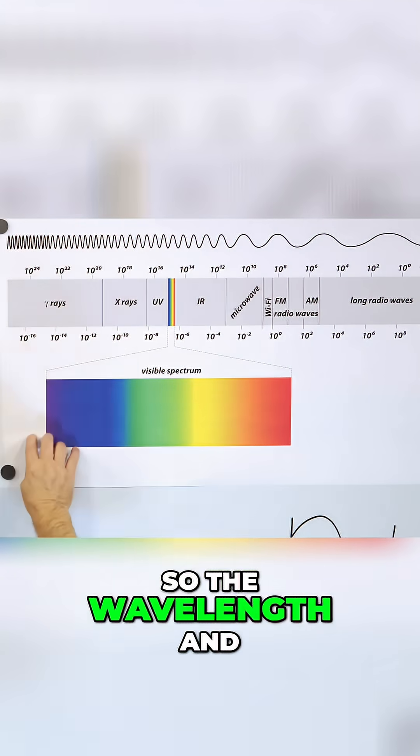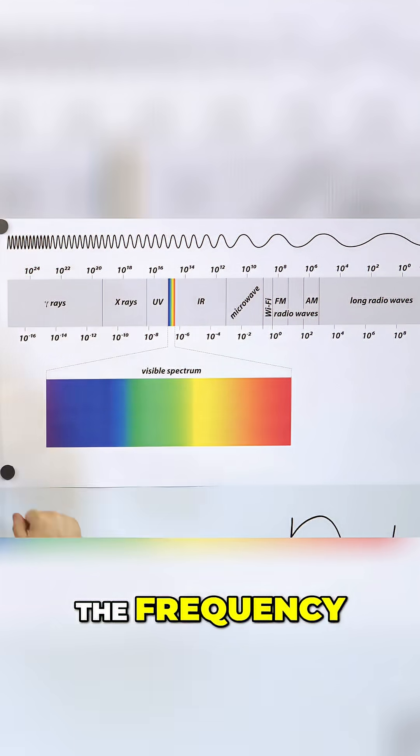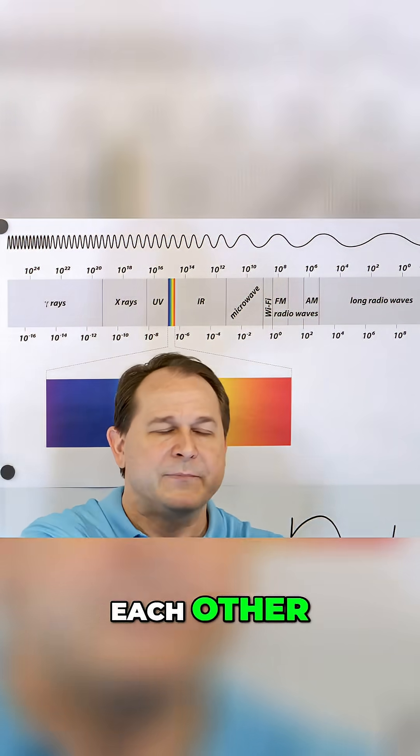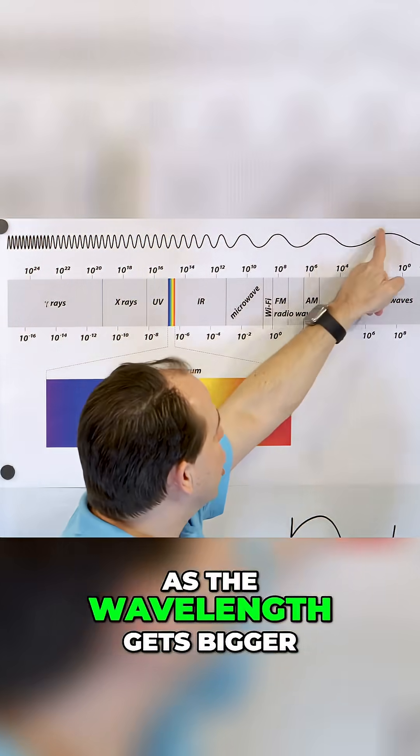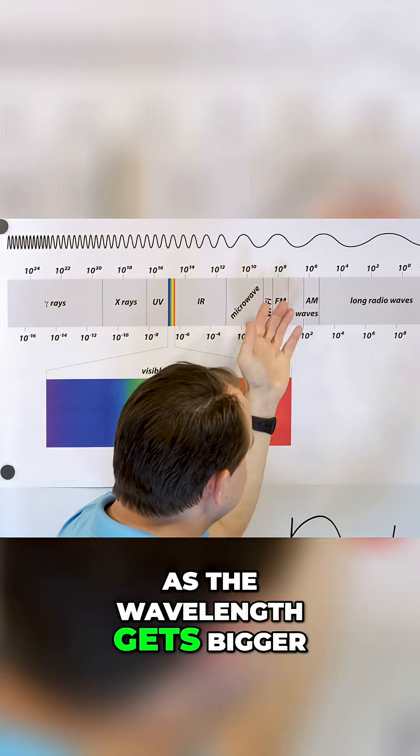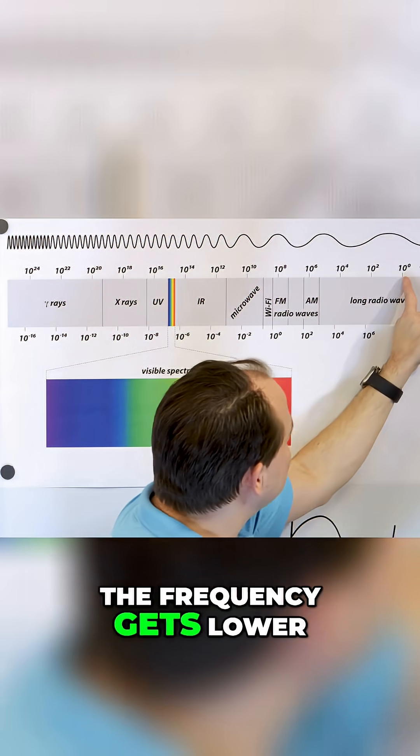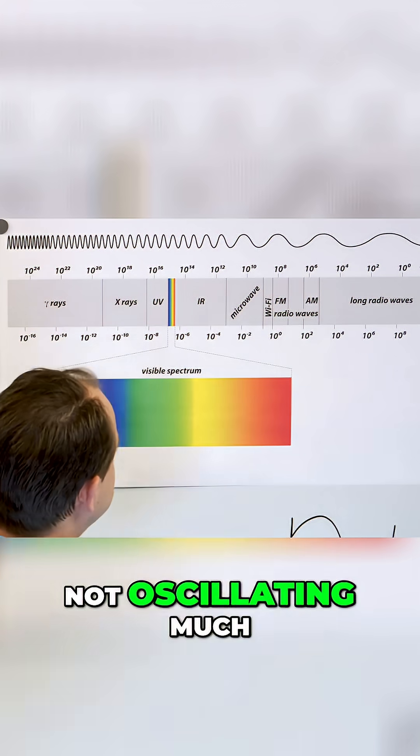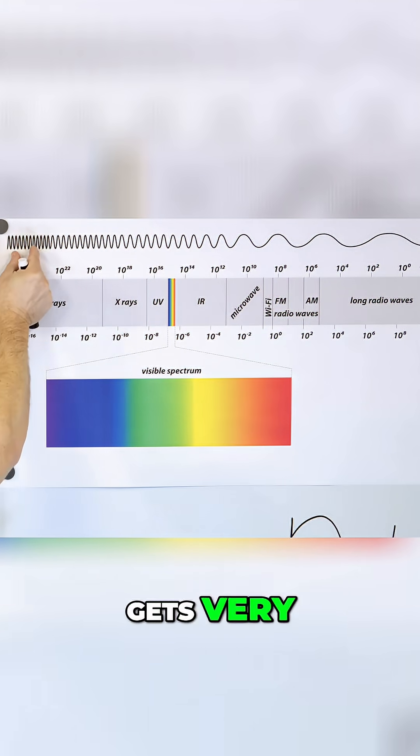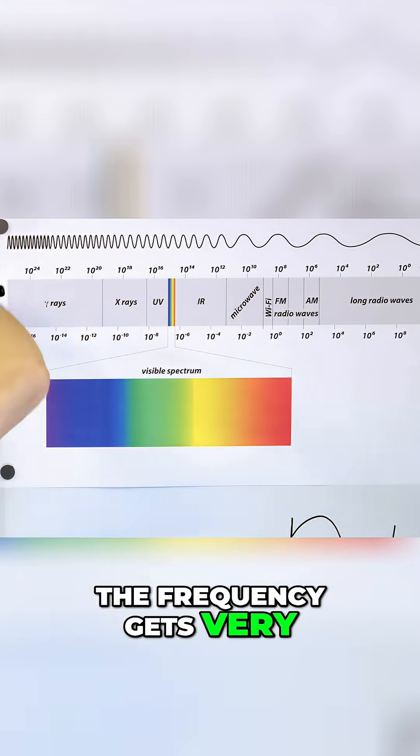So the wavelength and the frequency go opposite of each other. As the wavelength gets longer, the frequency gets lower and lower because it's not oscillating much. And as the wavelength gets very, very small, the frequency gets very, very fast.